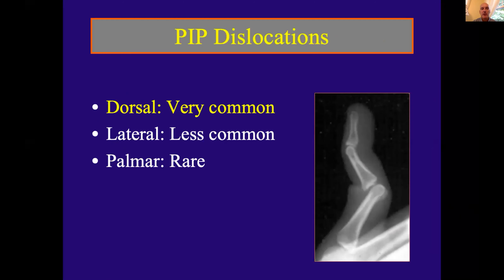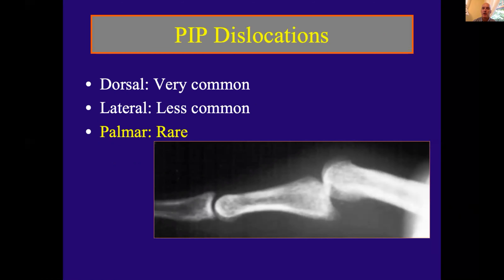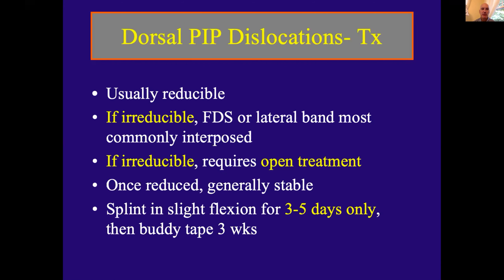PIP dislocations: dorsal dislocations are very common, lateral are less common, and palmar are rare. Dorsal dislocations are almost always reducible — if irreducible, suspect FDS or a lateral band interposed in the joint, requiring open treatment. Once reduced, they are generally stable. The emergency room typically splints in extension, which is the least stable position. Splint in slight flexion for three to five days, get a follow-up x-ray, then buddy tape for three weeks with active range of motion to prevent stiffness.